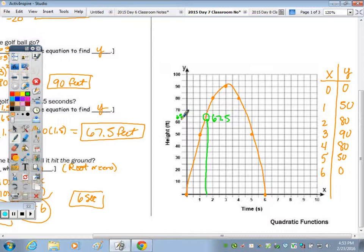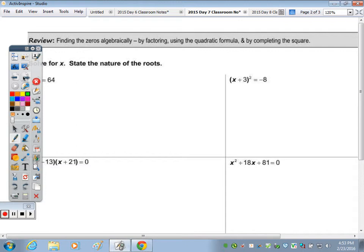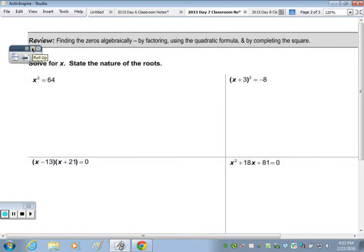On the next page, we're going to go over all the methods that we use in order to solve for x, finding a zero: factoring, quadratic formula, completing the square. And also, state the nature of the roots. That just means to describe the type of roots that you have. So looking at the first one, the shortest method would be to take the square root of both sides. And x is equal to, don't forget the plus and minus, 8. These are real roots, they are rational, and I have two different ones so they're unequal.